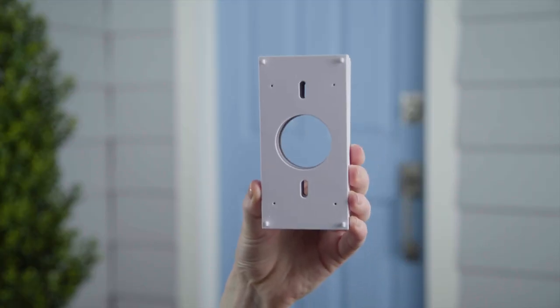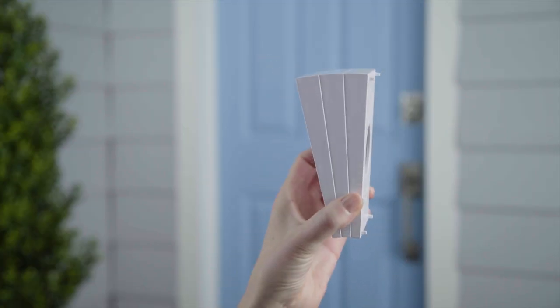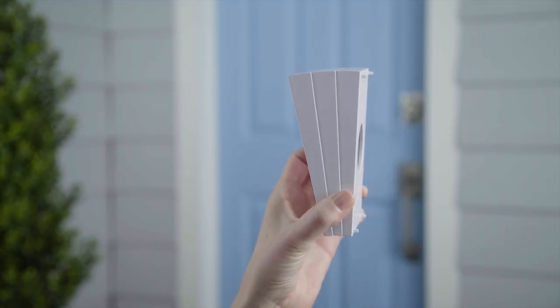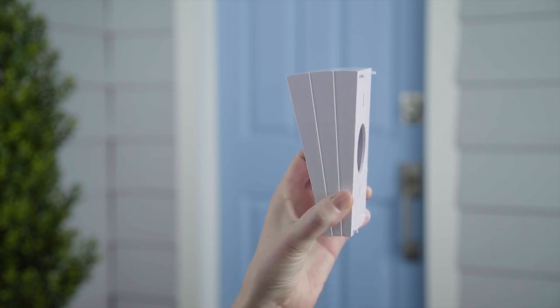This is the Wedge Kit for Ring Video Doorbell. The Wedge Kit allows you to angle your Ring Doorbell down either 5, 10, or 15 degrees.